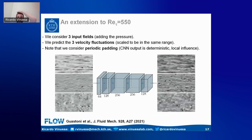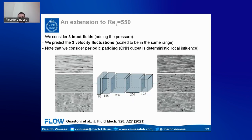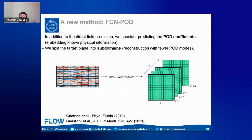On the left we have the three wall inputs, and on the right I show the three velocity fluctuation components at the target location — what we want to predict. This is the FCN method, a fully convolutional network. It's also possible to use the FCN-POD method, which combines convolutional networks and proper orthogonal decomposition — essentially PCA in the context of machine learning.